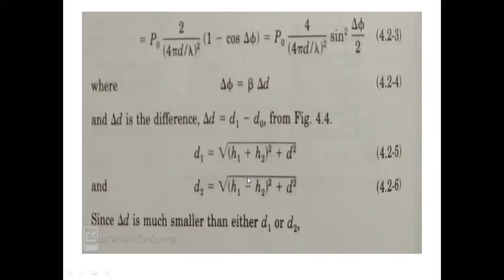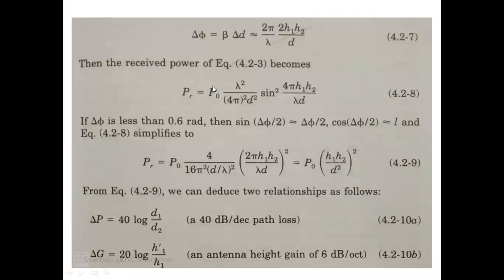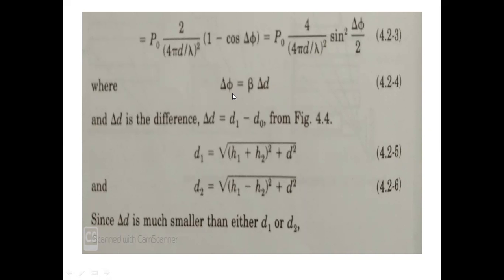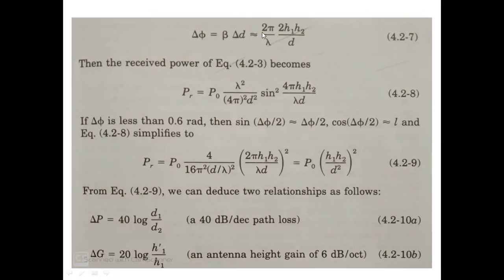Since ΔD is much smaller than D1 and D2, after simplification the phase difference becomes: Δφ = β · ΔD ≈ (2π/λ) · (2H1H2/D), where β = 2π/λ and ΔD simplifies to 2H1H2/D. This gives us the phase difference in terms of antenna heights H1 and H2 and distance D.